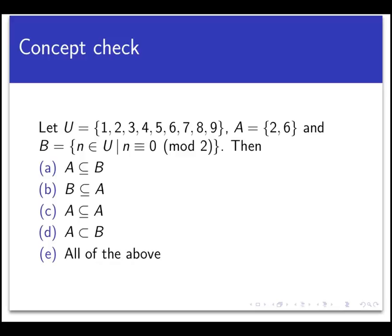Here's a concept check to see how well we're acquiring these ideas. Let U be the set 1 through 9. A is the set {2, 6} and B is the set given in set builder notation: the set of all n in U such that n is congruent to 0 mod 2. Then which of the following can you say?